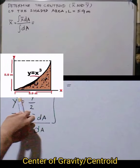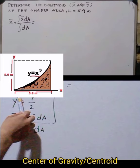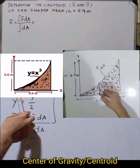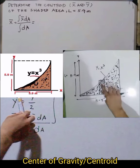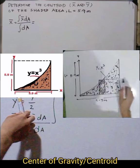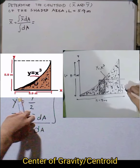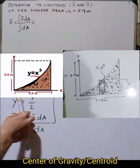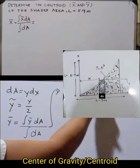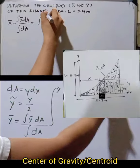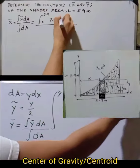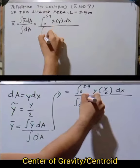Determine the centroid x̄ and ȳ of the shaded area, which has a length of 5.9 meters, where y = x³. To find it, we take a small vertical strip element. The height of the strip is y, with an imaginary centroid at y/2, the horizontal distance from the axis is x, and the strip thickness is dx.